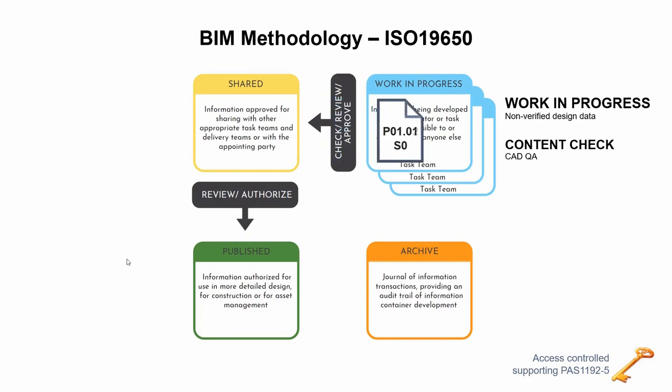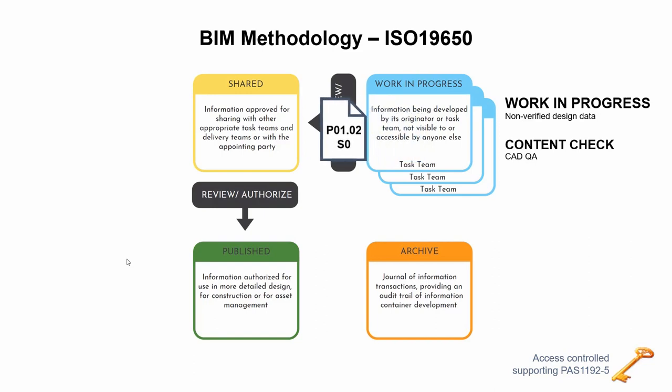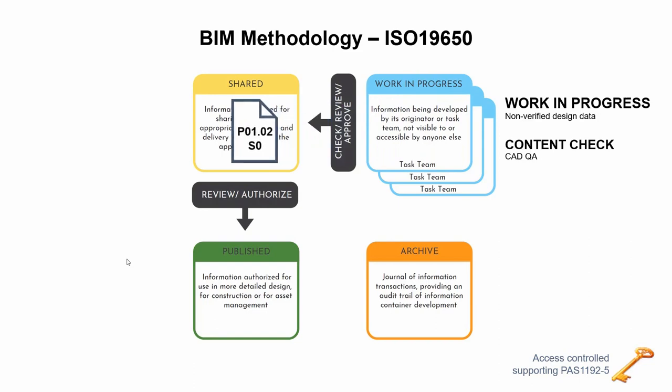If it's rejected, ProjectWise will manage the increase in minor revision and release it back to the work in progress user. At this point, the process starts again — we make the changes, go through the checking phase and eventually get to a shared document. Once the document is shared, it has a different suitability code, it loses the minor revision, and it's then available for other people on the project to see and use for coordination.